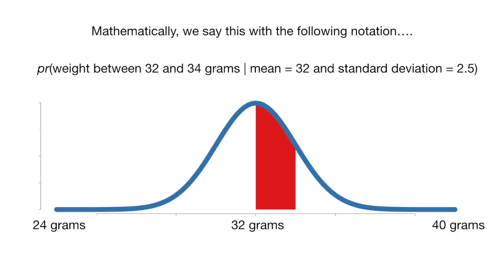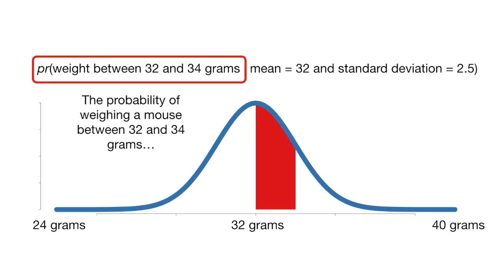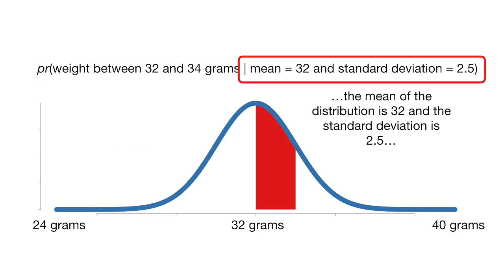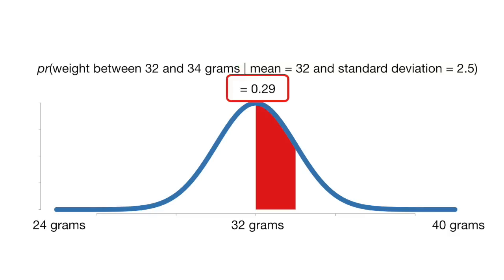Mathematically, we say this with the following notation: the probability of weighing a mouse between 32 and 34 grams, given the mean of the distribution is 32 and the standard deviation is 2.5. And all this equals 0.29.